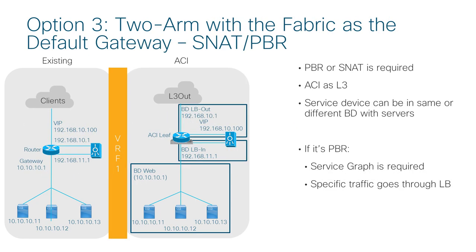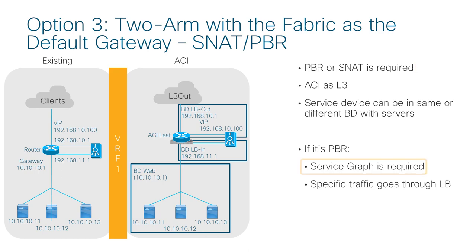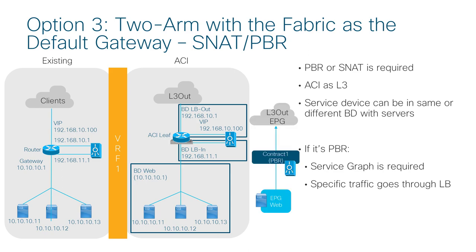Option 3 is fabric as the gateway. In this design, we have three bridge domains — one for the server segment and the others for the load balancer. Source NAT or PBR is required to make return traffic go back to the load balancer. If PBR is used, service graph is mandatory. The advantage of this design is that only specific traffic goes through the load balancer. For contract design, if PBR is used, one contract is between consumer and provider EPGs, and internal service EPGs for the load balancer interfaces are created through the service graph. If source NAT is used instead of PBR, service graph is not mandatory — in that case, it's going to be two contracts, same as previous examples.